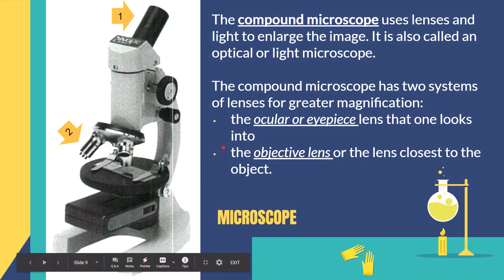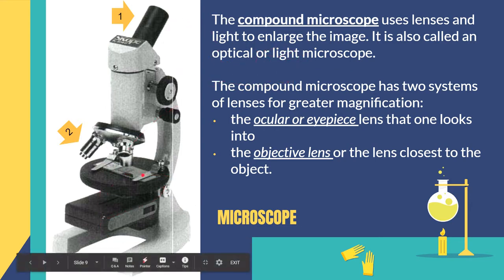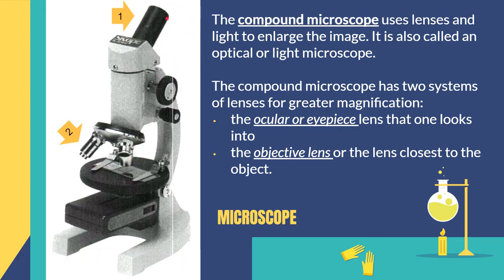This microscope is what we should be familiar with because this is what we usually use in school — we call it a compound microscope. Compound, not simple, because it uses two lenses. It uses light to enlarge the image, falling under the category of optical microscope because we use our eyes, and light microscope because we use a light source. It has two systems of lenses: the ocular lens or eyepiece, and the objective lens closest to the specimen.